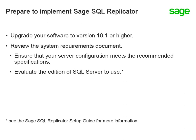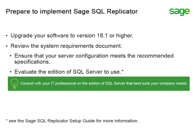SQL Replicator requires a dedicated instance of SQL Server, which can be installed on the accounting server or on a different server. Depending on the size of your company folder, you may be able to use SQL Server Express, which comes at no extra cost, instead of SQL Server Standard Edition or SQL Server Enterprise Edition, which are purchased separately. Refer to the System Requirements document or the Setup Guide to determine if you're able to use SQL Server Express. We recommend that you consult with your IT professional on the edition of SQL Server that will best suit your organization based on the features, the size of your database, and processing needs.